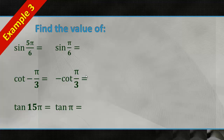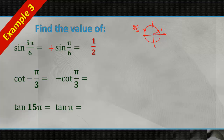This is where using the reference angle comes in handy. We want to find the value of sine of 5 pi over 6. On a circle, 5 pi over 6 is in quadrant 2, where sine is positive. The reference angle is pi over 6, and at pi over 6 the point is (root 3 over 2, 1/2). Sine is the y value, which is 1/2. So sine of 5 pi over 6 equals 1/2.